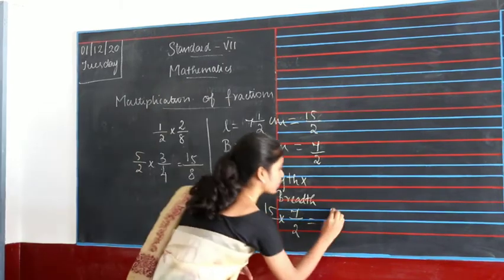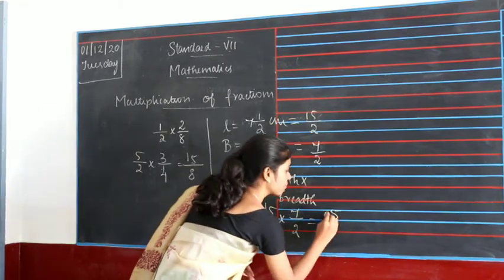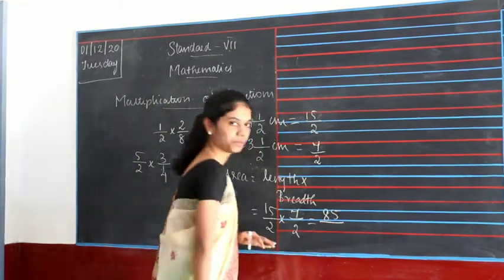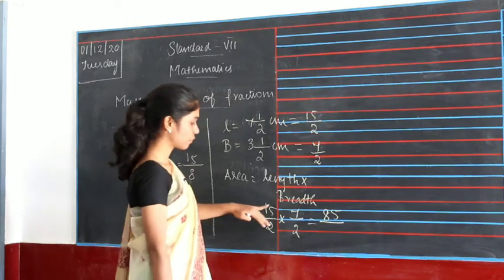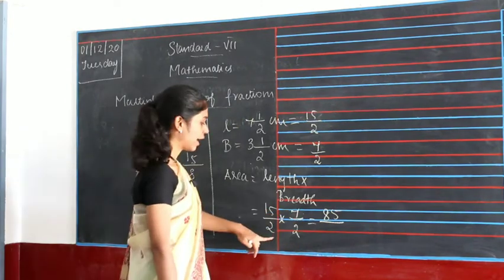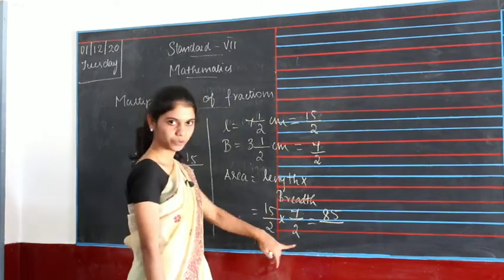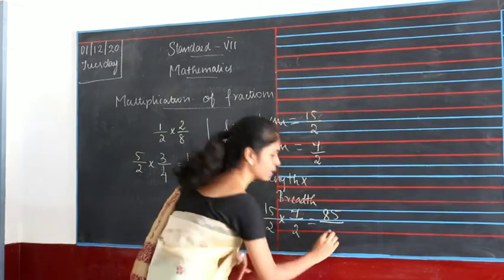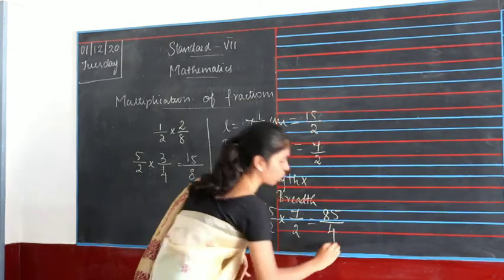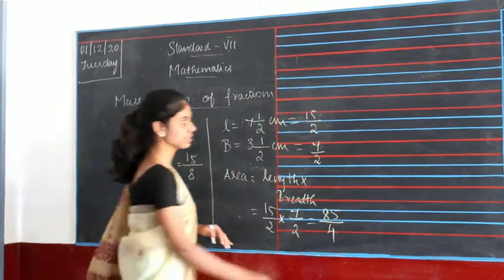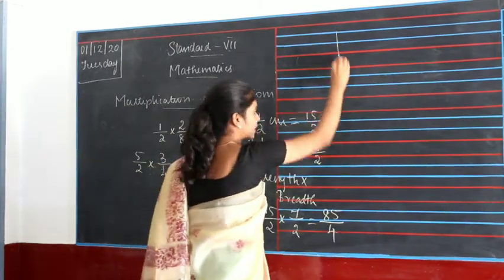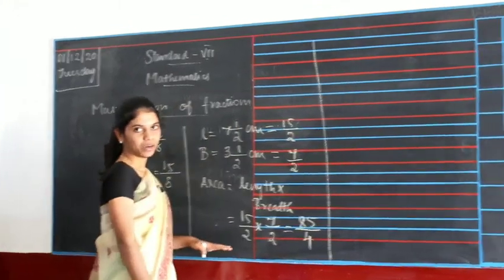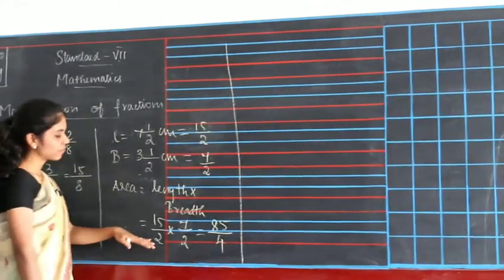15 into 7 will be 105 and 2 into 2 will be 4. So the answer is 105 by 4. This is how you multiply fractions.